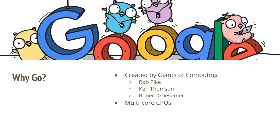Go was created at Google because Google realized they were doing a lot of work in C, C++, and even Python, and needed to take advantage of multi-core CPUs. The reality is that many programming languages we use today were conceived years ago when a single CPU was used with time-sharing. Those languages are designed to run in single threads — you can do concurrency and parallelism, but you need to do a lot of work to get it right. Google decided to solve this problem.